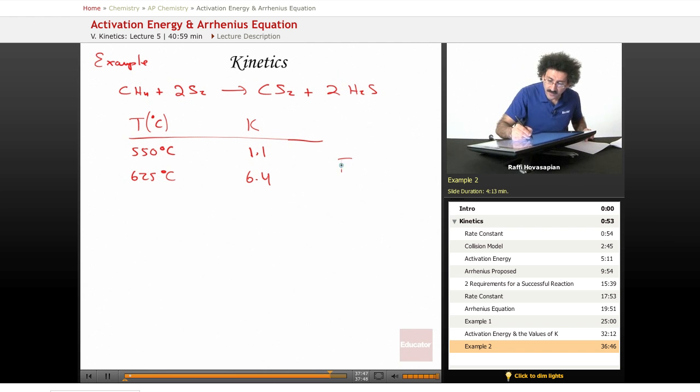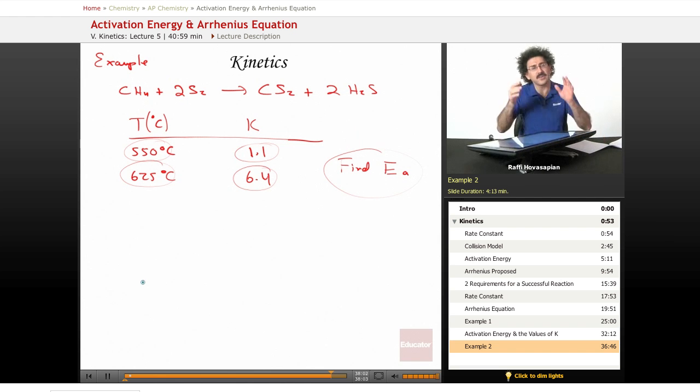We want to find the activation energy. Well, great. We have two constants and we have two temperatures, so let's use our equation that we just derived. And again, you don't have to know that equation. As long as you know the Arrhenius equation, everything else you can derive from there, because you're just taking logarithms and fiddling with things. That's why we're showing you the derivation, to show you don't have to memorize the equation.